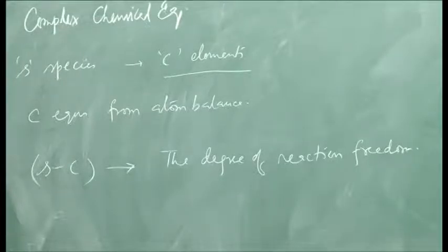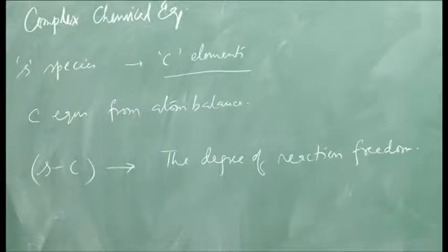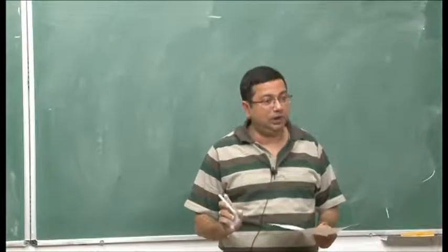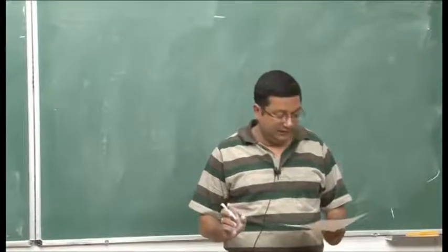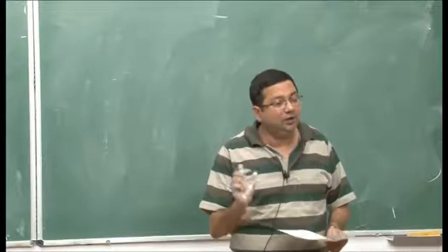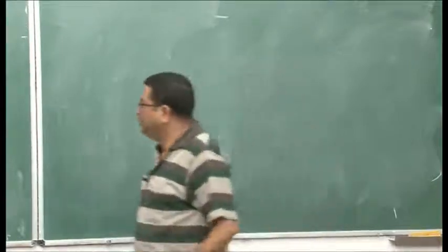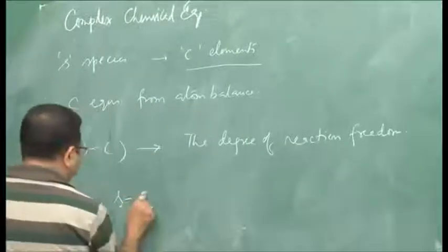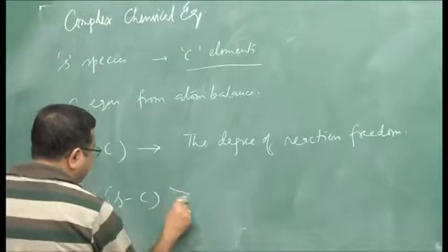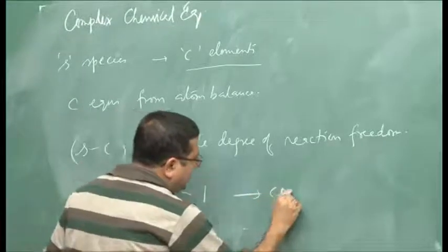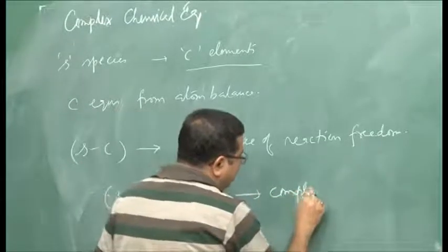A reaction having only one degree of reaction freedom is called a simple reaction — like the reaction in our example. If the degree of reaction freedom is greater than 1, that reaction is called complex. So if S minus C is greater than 1, that is a complex reaction.